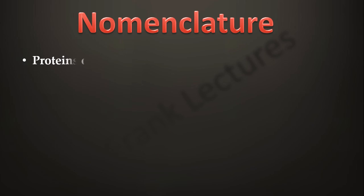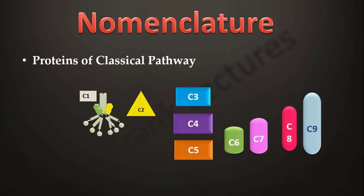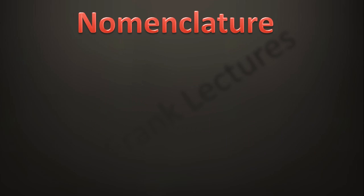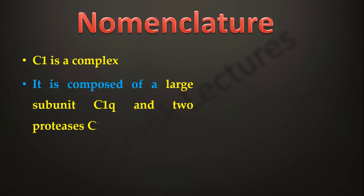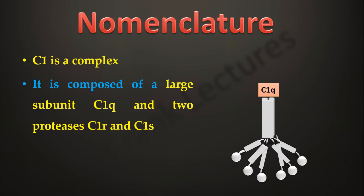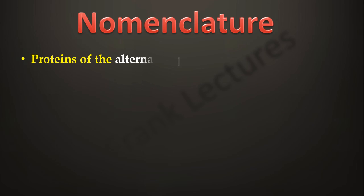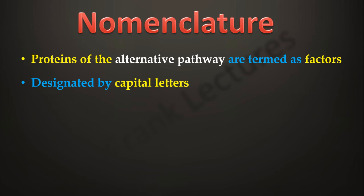In the classical pathway there are nine proteins, C1 to C9. There is one exception: C1, because C1 is not a single protein — it is a complex of three proteins, namely C1q, C1r, and C1s. Proteins of the alternative pathway are termed as factors and they are designated by capital letters, for example Factor B and Factor D.